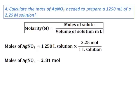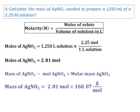Multiplying the moles with the molar mass will give me the mass of silver nitrate, which is equal to 475 grams.